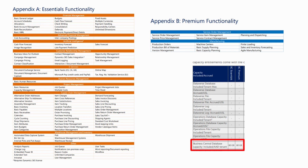At its core, Business Central has three license types: Essentials, Premium, and Team Members. Let's ignore Team Members for a second because Microsoft classes them as additional licenses — you have to have at least an Essentials or a Premium license within Business Central. Essentials is the slightly cheaper, entry-level license.